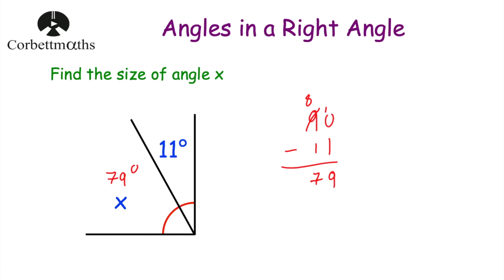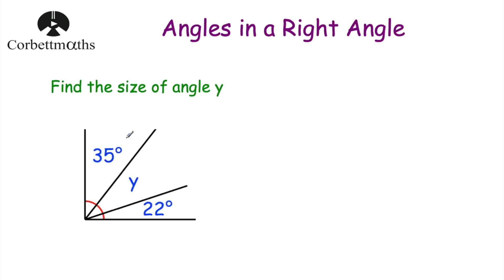Let's have a look at our next question. This time we've got a right angle and we've got three angles that make up this right angle: 35 degrees, y, and 22 degrees. We want to work out the size of angle y. These three angles will add together to be 90 degrees. So if we add the two we're given — 35 degrees and 22 degrees — that'll tell us what those two add up to, and if we take that away from 90 that'll tell us what's left for y.